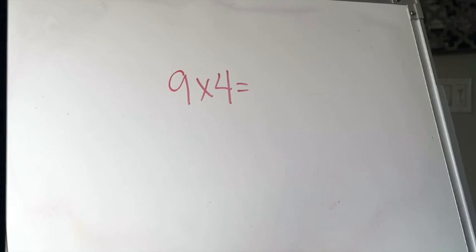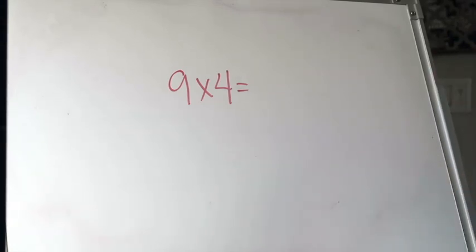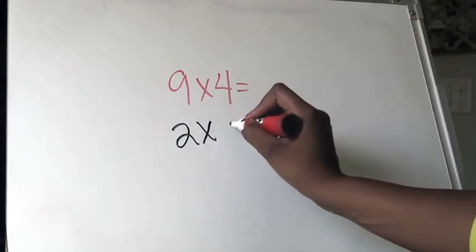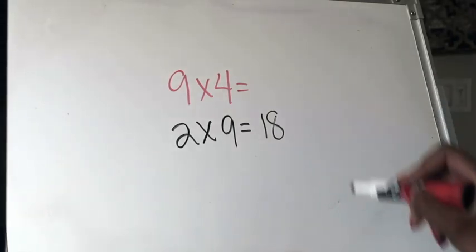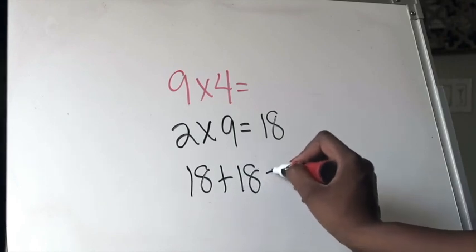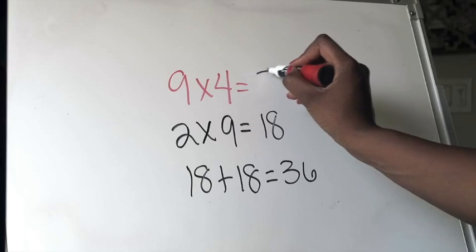In our last example, we are multiplying nine times four. I might not know my nines well yet, and I'm a little shaky on my facts of four — but I know my facts of two. So I break that four down into a two and rewrite this as two times nine. Two times nine is 18. Since I'm using the double strategy to multiply by four, I take my product and double it: 18 plus 18 equals 36. So the product of nine times four is 36.